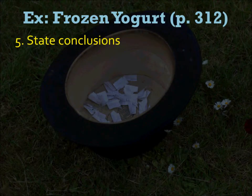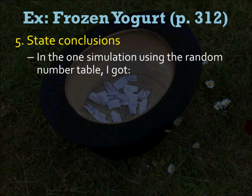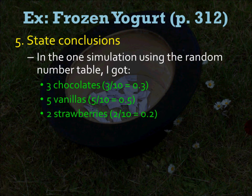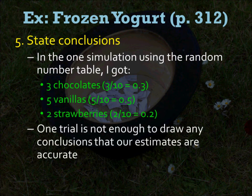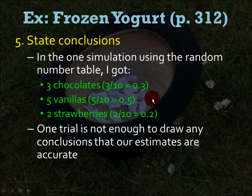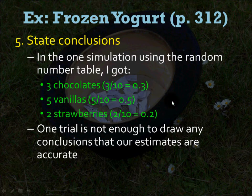The last step is to state the conclusions. In the one simulation using the random number table, I got 3 chocolates, 5 vanillas, and 2 strawberries. Can you draw much of a conclusion from this? No — one trial is not enough. You might have to run it 100 or 200 times. If you ran it many, many more times, you should see that the percentages overall should approach the percentages you started with. That's how the law of large numbers works.